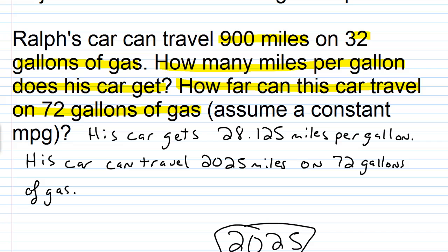Okay, check your division: 900 divided by 32 is 28.125. So yes, this car gets 28.125 miles per gallon. And then check your multiplication: 28.125 times 72 does that give you 2,025? Yes, it does. So we have the correct answer here, and so we move on to the next problem.